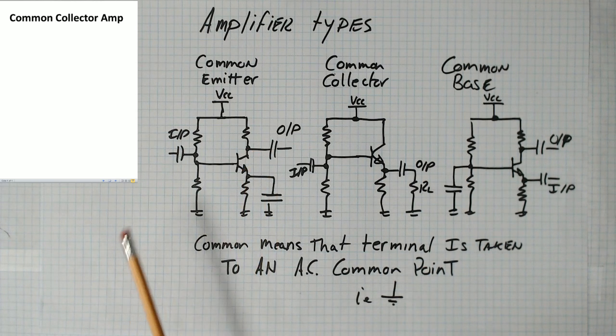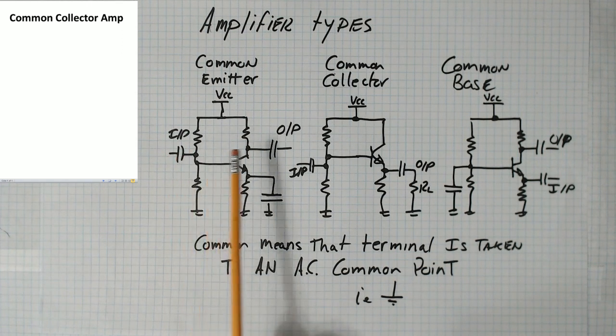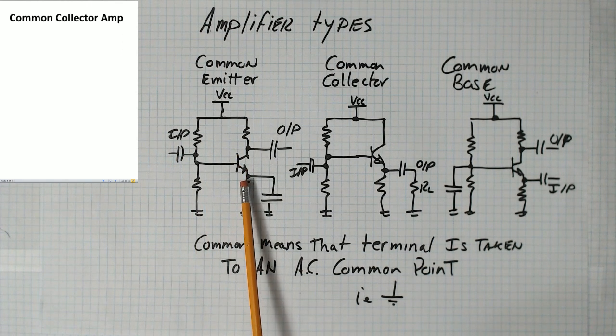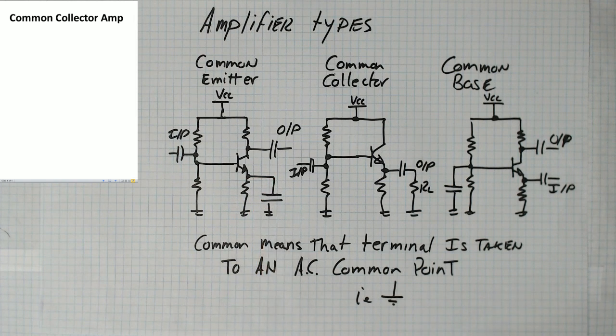And then we take the output off of the collector. So on a common emitter amplifier, the input goes on the base, the output comes off of the collector, and the emitter is taken to an AC ground point through a capacitor.